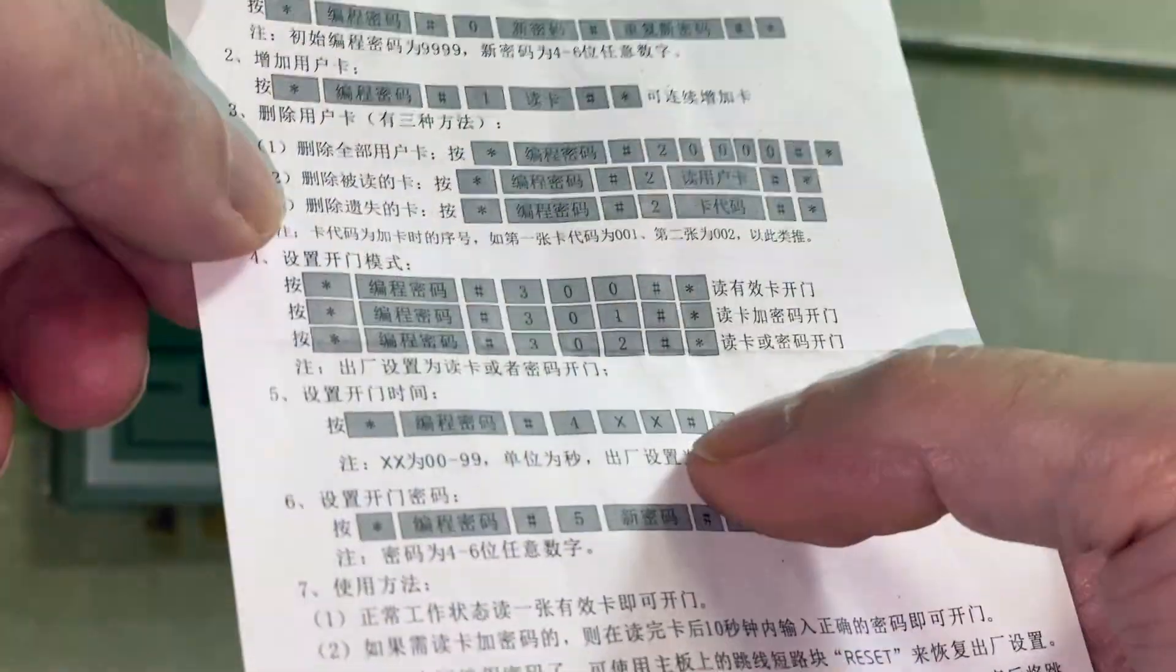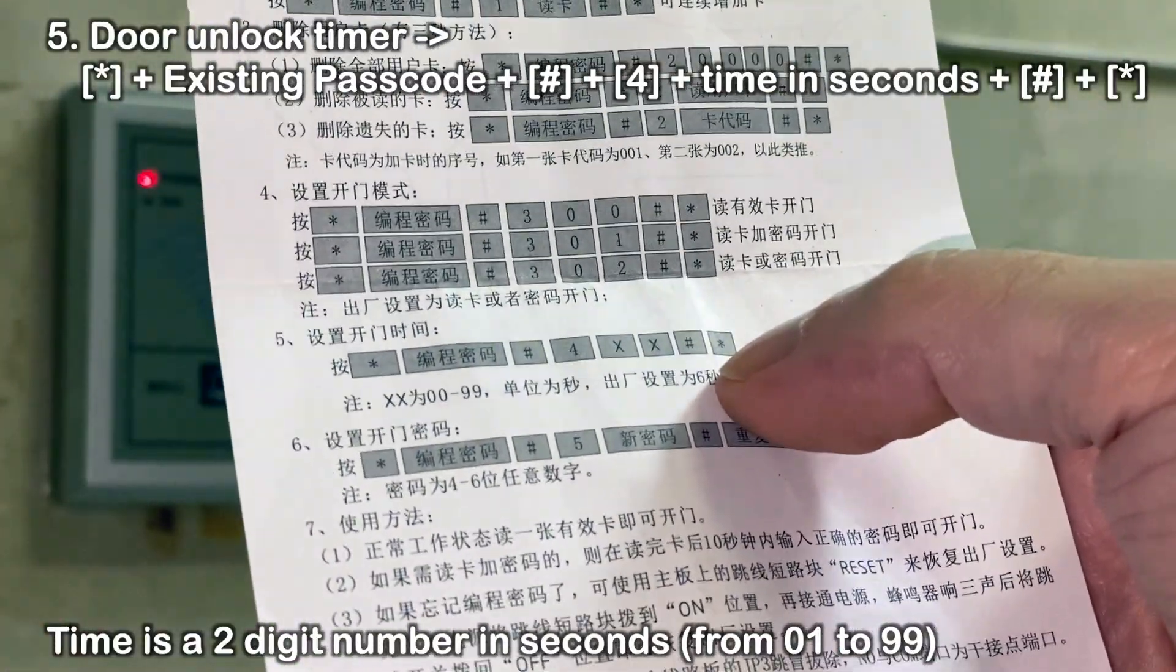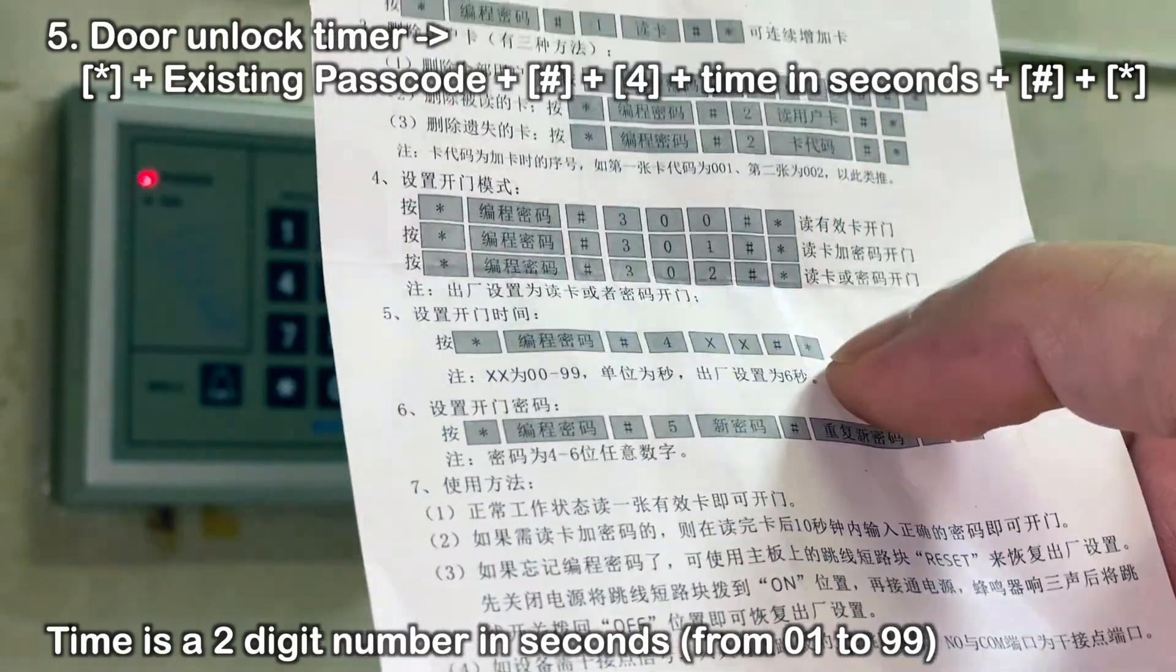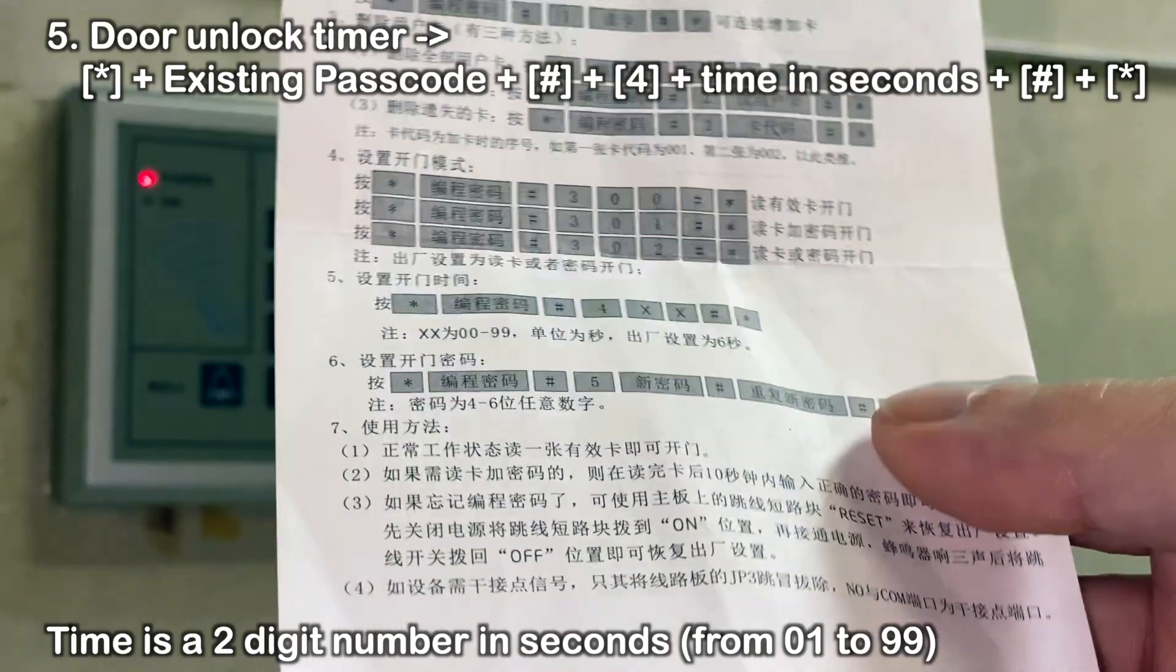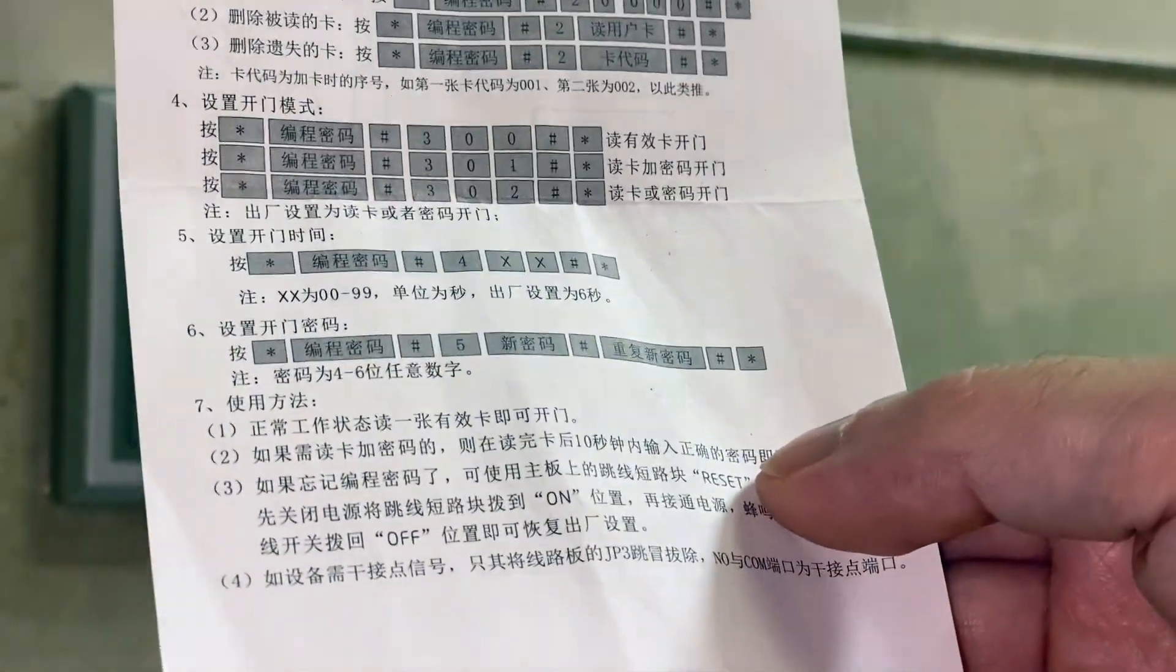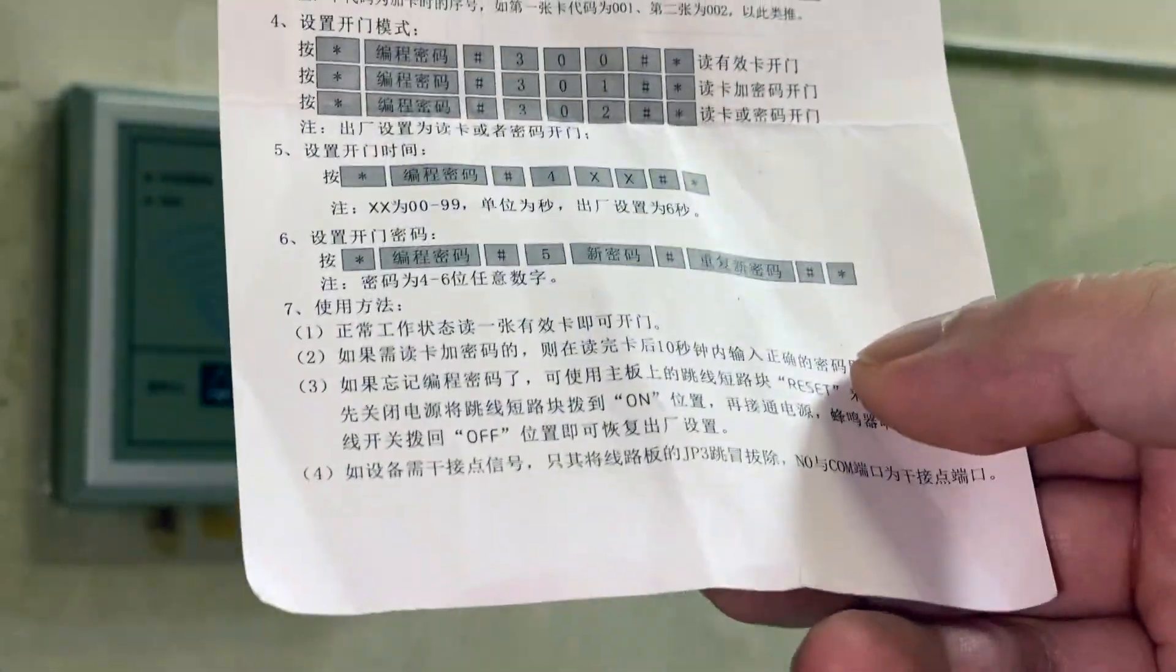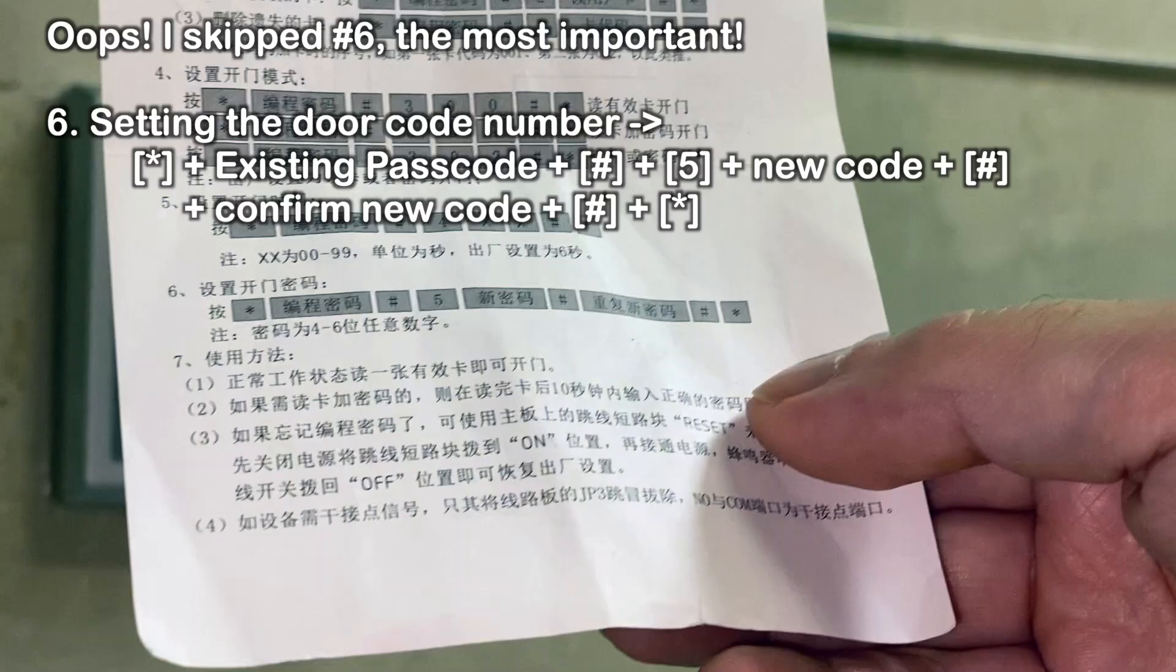Next up is setup of how long the door stays unlocked, I guess every time you swipe or type in the passcode. Its default is six seconds. You can make that longer up to 99 seconds, which I guess is kind of dangerous, so probably shouldn't do it. But maybe six seconds is too short if there's people coming in and out with baggage or something like that anyway.